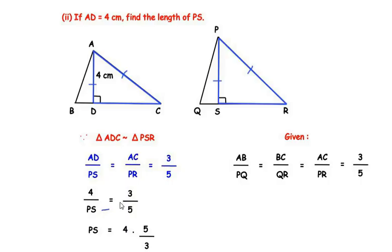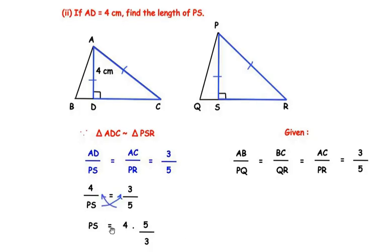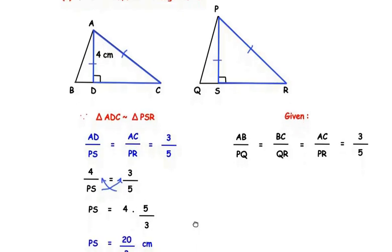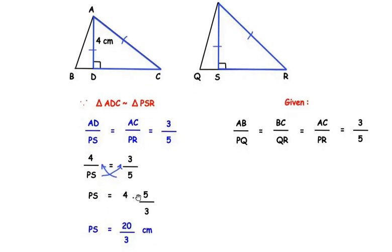Taking PS to one side and the fraction 3 over 5 to the other side, we get PS equals 4 times 5 over 3, which gives us PS equals 20 over 3 cm. This is our answer. If you want, you can convert this to a decimal or keep it as a fraction.